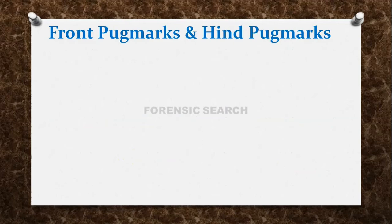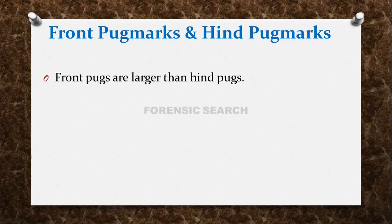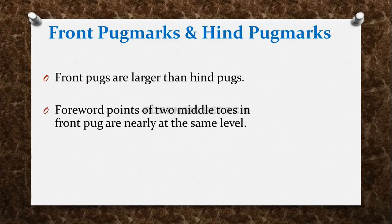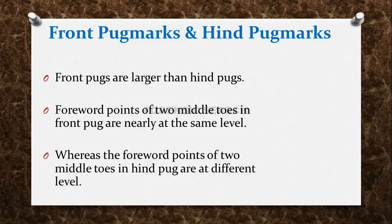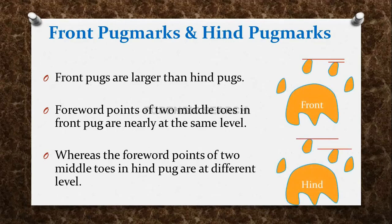Next, how do we differentiate front Pugmarks from hind Pugmarks? Basically, front paws are larger than hind paws. The forward point up to middle toes in front paws are nearly at the same level, whereas the forward points up to middle toes in hind paws are at different levels.